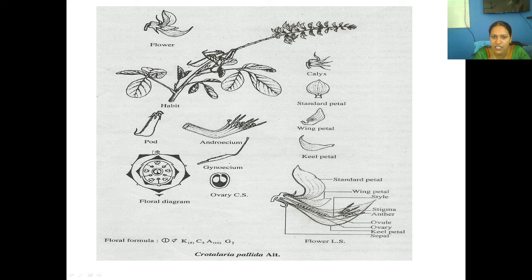This is the floral formula and this is the longitudinal section of the flower. In the LS you can see the perigynous condition — the half inferior, half superior arrangement. Any gynoecium condition should be marked very effectively in the diagram.